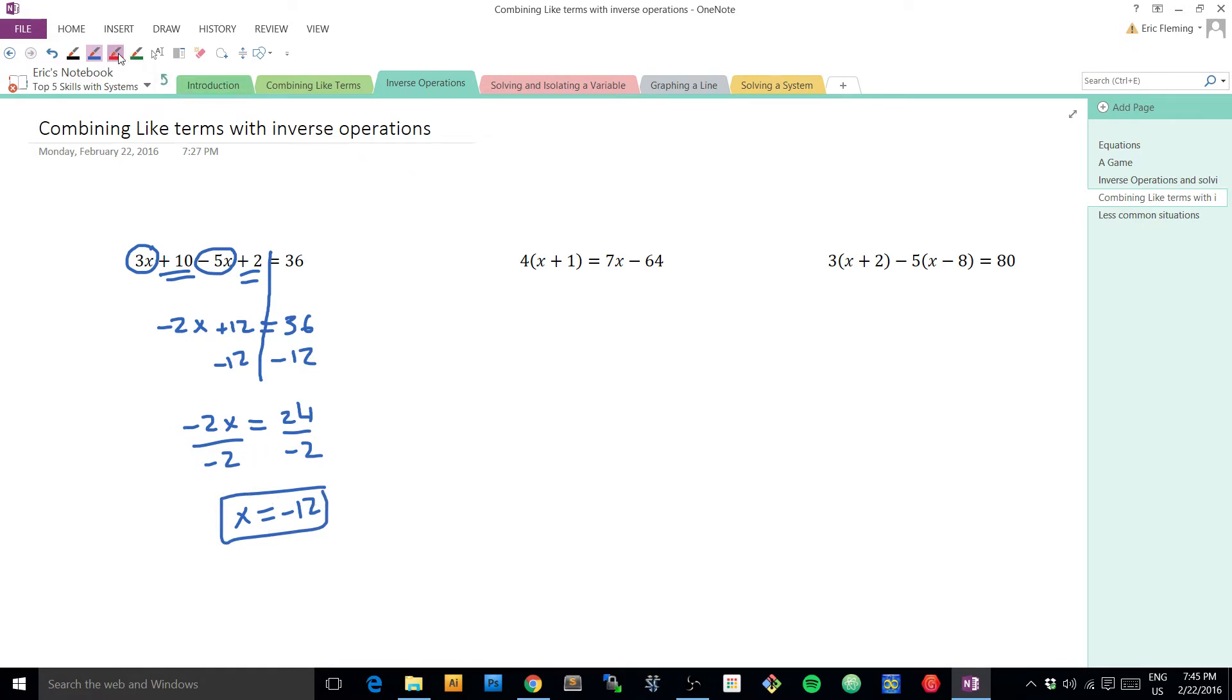In this next question, I noticed something a little different. We've got parentheses. Well, we're going to have to distribute to undo these parentheses, if you will. 4x+4 equals 7x-64. And here we have something that we haven't seen yet. We haven't seen when there are variables on both sides. Well, when you have variables on both sides, you've got to decide which side you want them on and an inverse operation that's going to make that happen. Your first decision doesn't really matter, but all the decisions that you make after that will be affected.